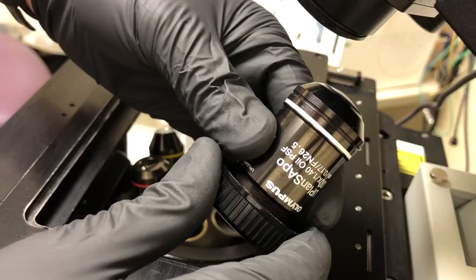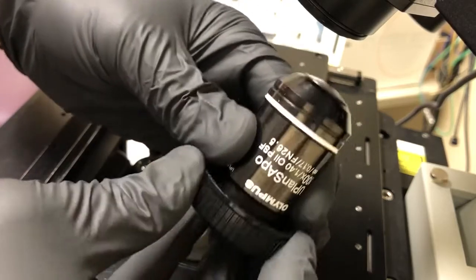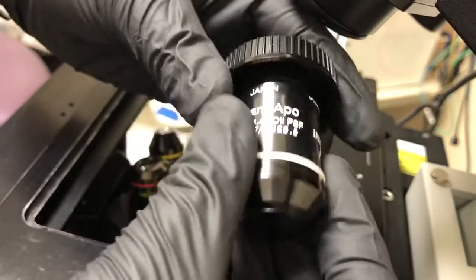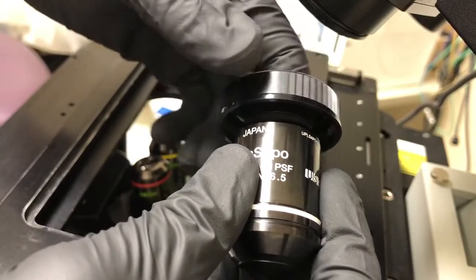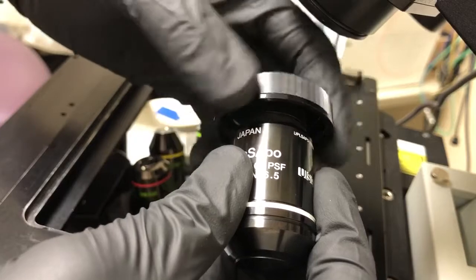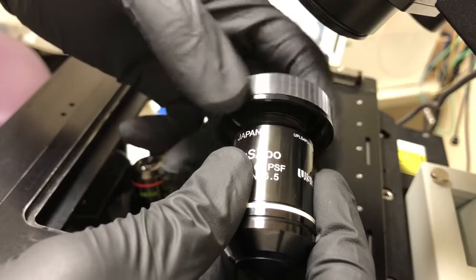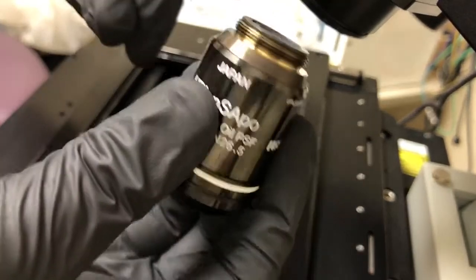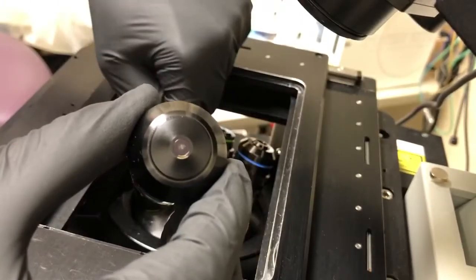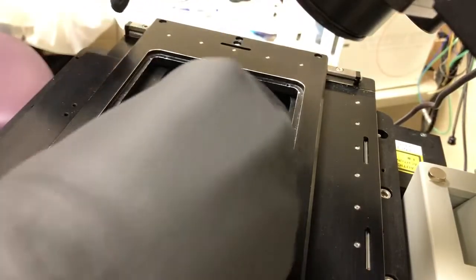Here you can see the objective. I'm going to unscrew it from the base. I like to do that by holding the objective and unscrewing the base, rather than holding the base and unscrewing the objective. So I have a firm grip on the expensive thing, the objective. Now I'll place it in this hole here and screw it in very gently.